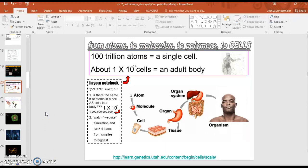All right, slide 20 is definitely a note taking opportunity. We see the pink box. So make sure you get this down. It says 100 trillion atoms equal a single cell. About 1 × 10^14 cells equals an adult body.